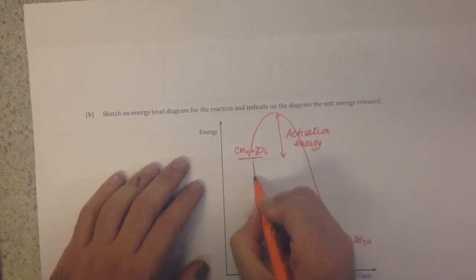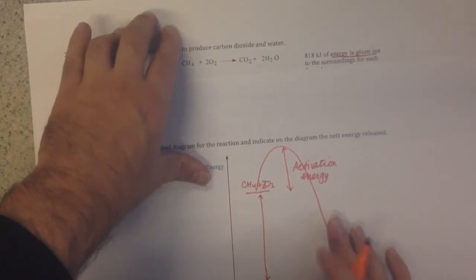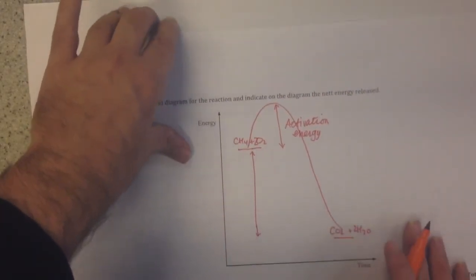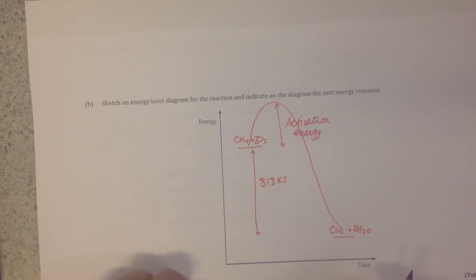This distance here is the energy that the reaction gives out. We know that because it's mentioned in the question—818 kilojoules. So the difference in energy is 818 kilojoules.